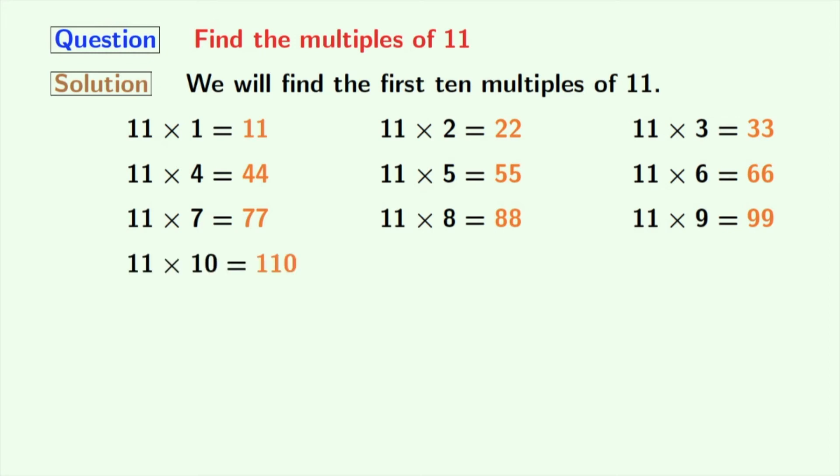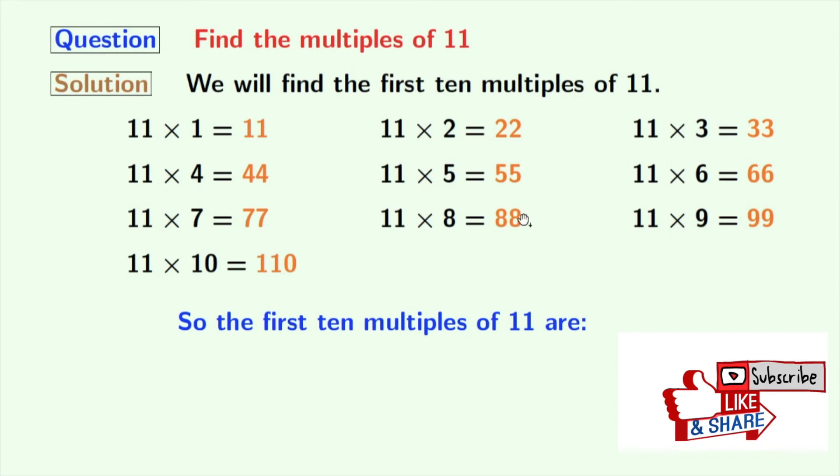If we multiply 11 with 10, we get 110. So, here are the first 10 multiples of 11.